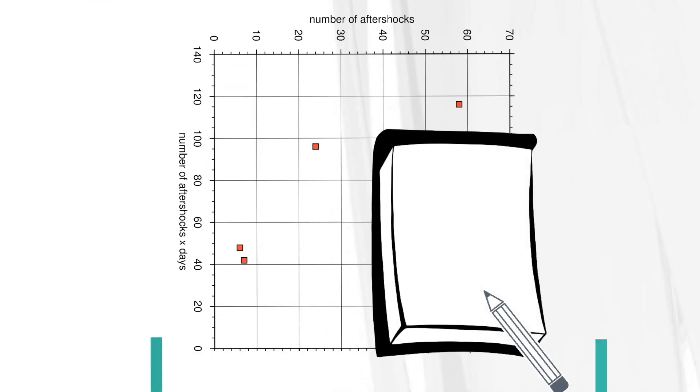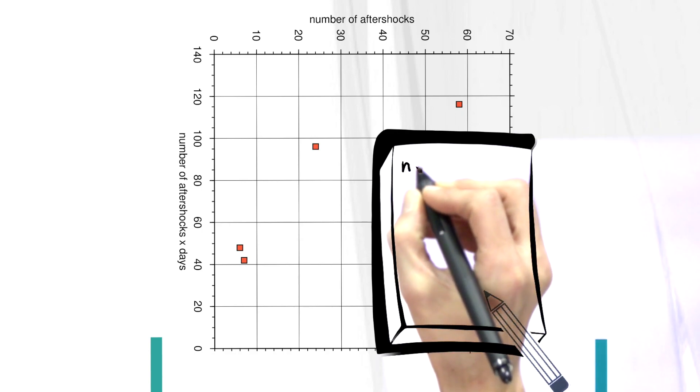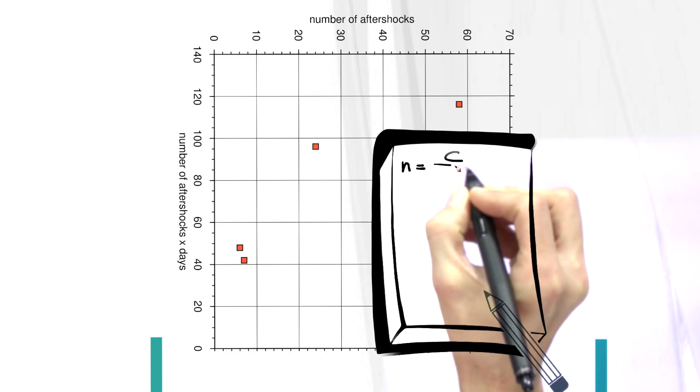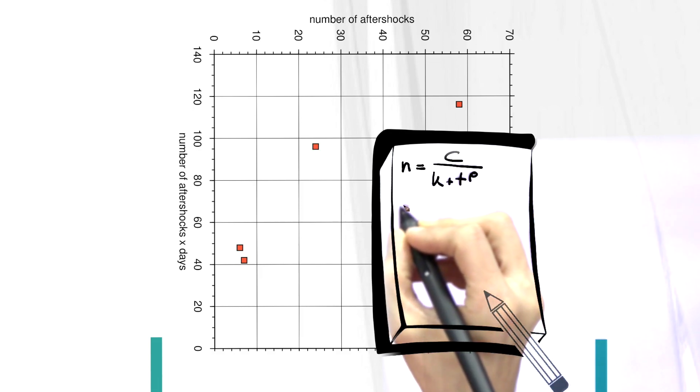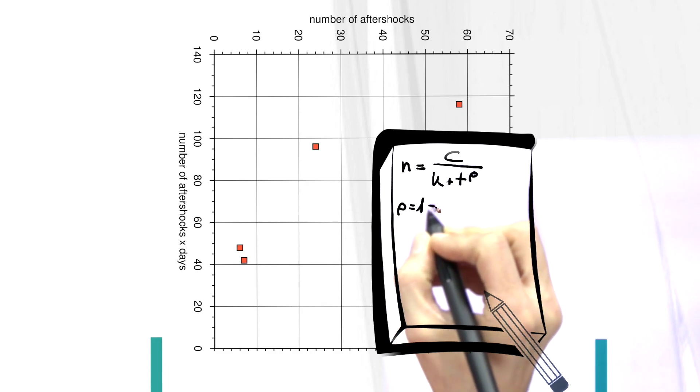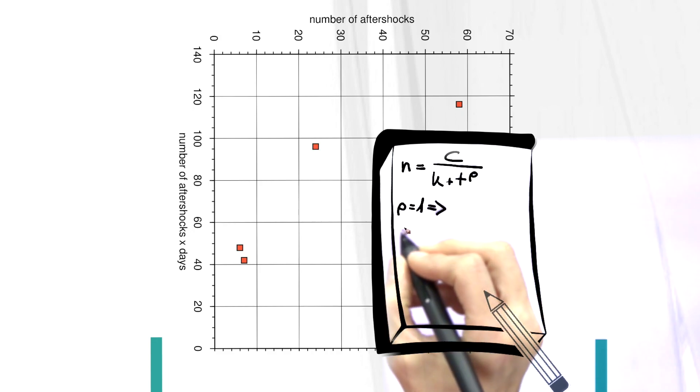The most commonly used form of Omori's Law is rate of occurrence n equals c divided by k plus time t to the power of p. The parameter p is typically assumed to be approximately 1, such that the equation is simplified and only the values of c and k need to be determined.